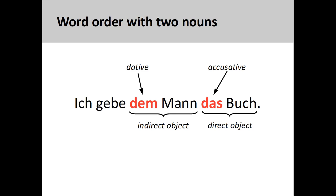You will also recall that the indirect object is marked by the dative case and the direct object is marked by the accusative case.